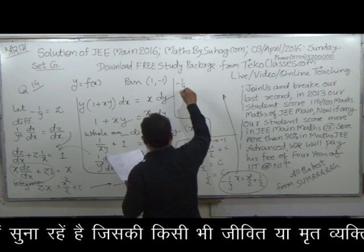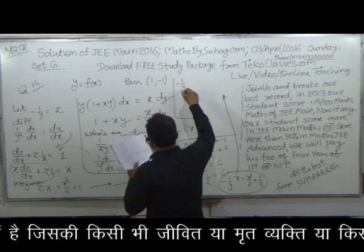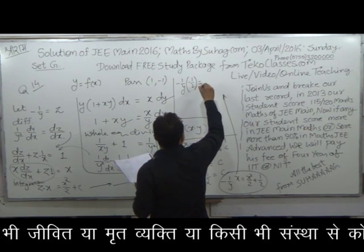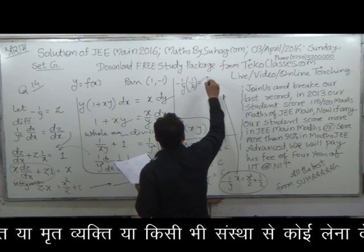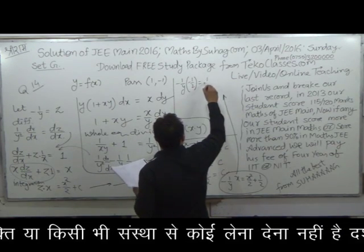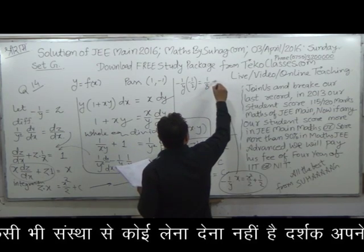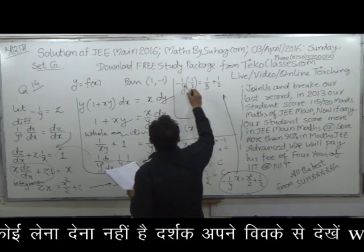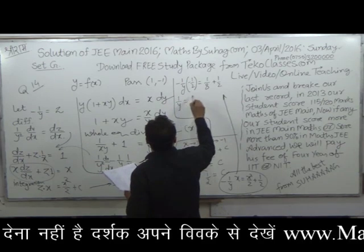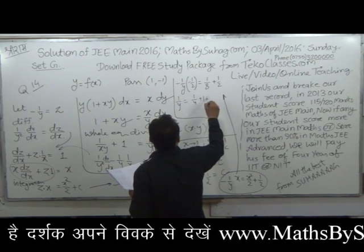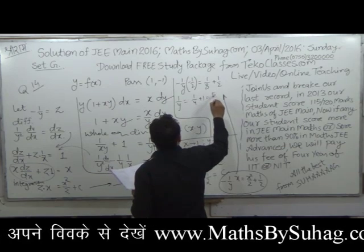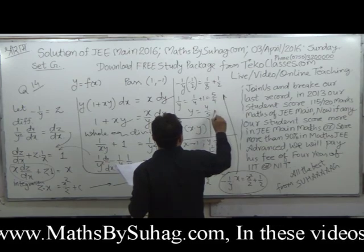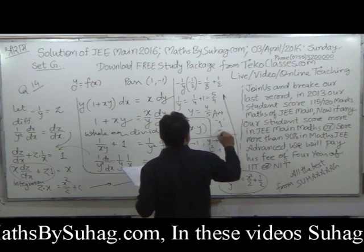अब function की value x = -1/2 पे निकालनी थी. -1/y और x की जगह -1/2 रख दिया. सामने (-1/2)² = 1/4, और 2 से divide होके 1/8, plus 1/2. 2 की value सामने गई, तो 1/y is equal to 1/4 + 1 = 5/4. तो y is equal to 4/5 — answer option number 1.